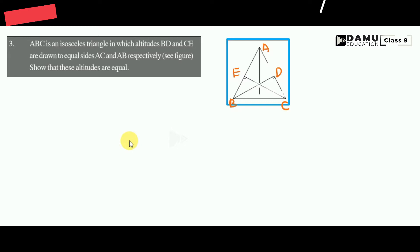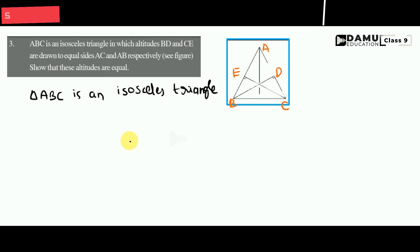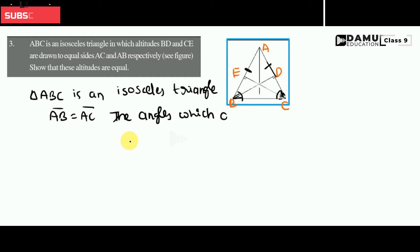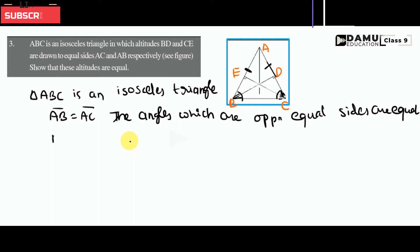So let us consider triangle ABC. ABC is an isosceles triangle, which means AB will be equal to AC. For that, the opposite angles are also equal. In a triangle, the angles which are opposite to equal sides are equal. So in isosceles triangle ABC, angle B will be equal to angle C — that is, angle ABC equals angle ACB.